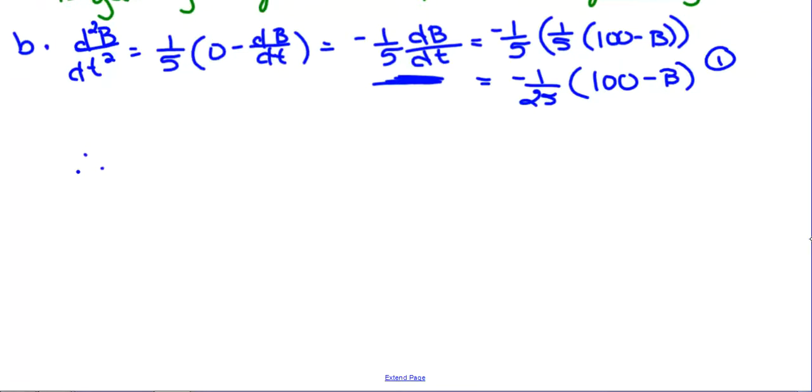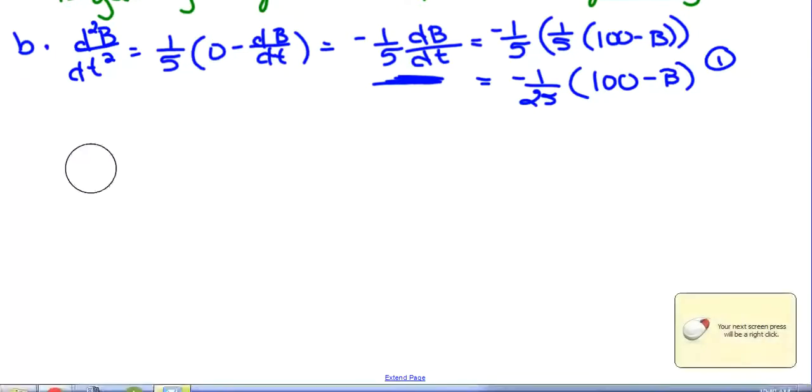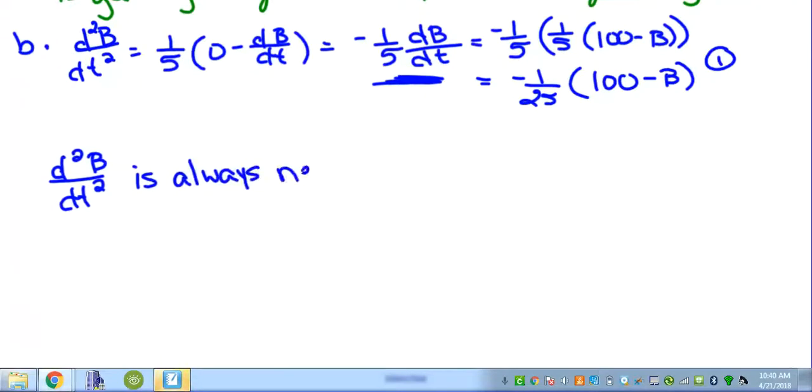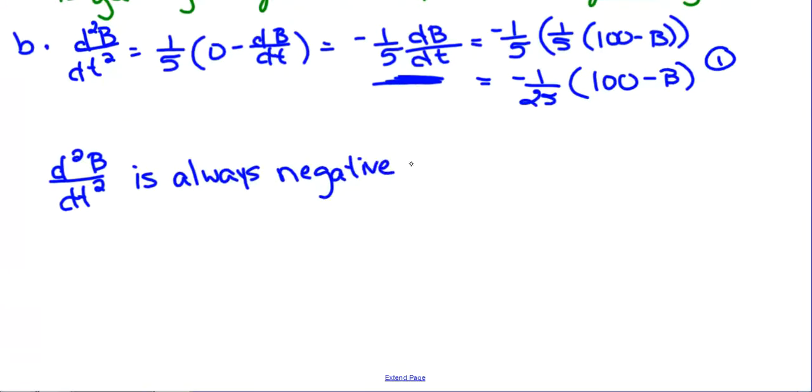So the bird at most weighs a hundred pounds, or not a hundred pounds, a hundred grams. That's a big bird. A hundred grams. He starts at 20 grams and the most he weighs is a hundred grams. So this value has always got to be positive, right? Because B is always going to be less than a hundred. So this part is always positive. So we're taking a positive number and we're multiplying it by this negative one over 25.